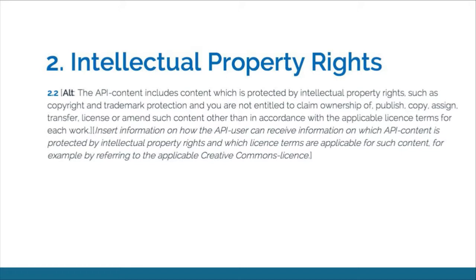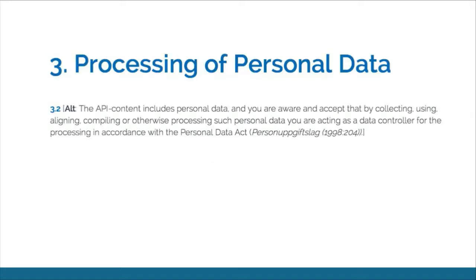Here's an example of a choice influenced by mandatory law: if you as an API provider send out data that contains personal data, your users who receive this data will have certain obligations under data protection law. It's not a mandatory requirement under Swedish law to inform your users about this, but since our goal was to write a fair and well-informing license, this is one choice you can make.